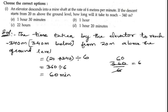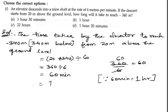So 360 divided by 6 equals 60. We know that 60 minutes is equal to one hour. So we can write down one hour. The correct answer is option B.